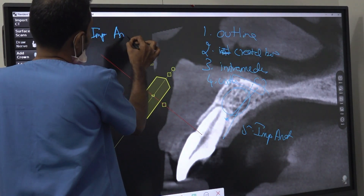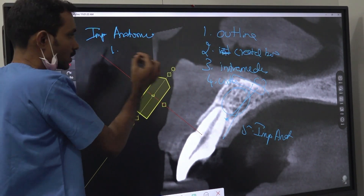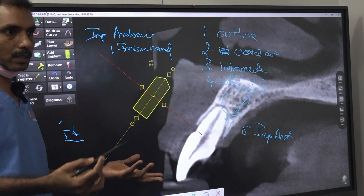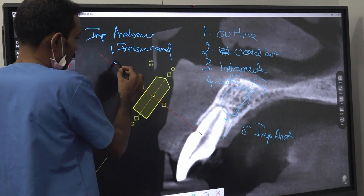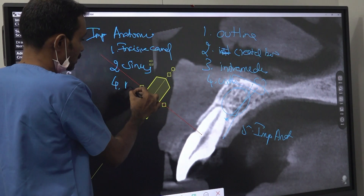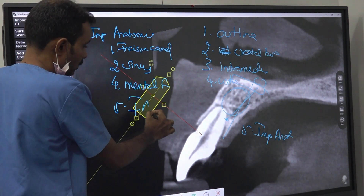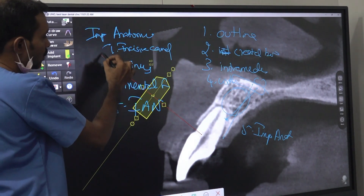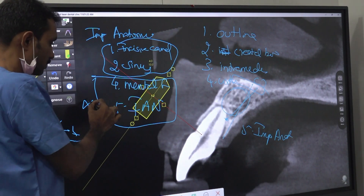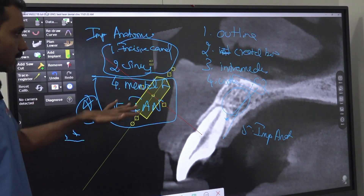What are those important anatomical structures? We have to avoid the incisive canal — knowingly if an implant goes into it there is no major problem, but try to avoid as much as possible. Then the sinus. On the lower side there is the mental foramen, and another one is the inferior alveolar nerve. The sinus is not very significant — even if the implant goes into the sinus, no major problem. But the nerve should be avoided.